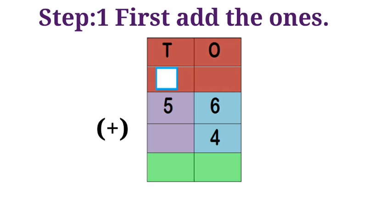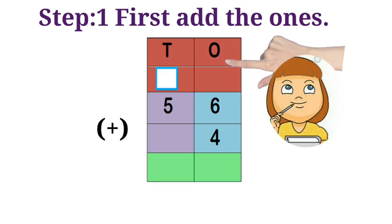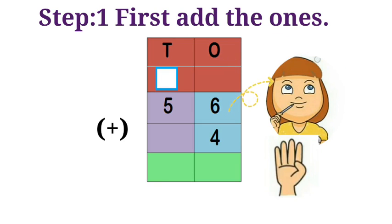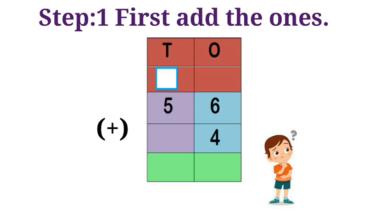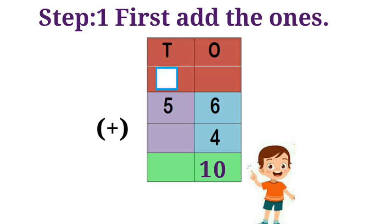Step one: first add the ones place. Six in the mind, four in the finger. Six after adding plus four, what is the answer? Ten. Ten is a two-digit number.